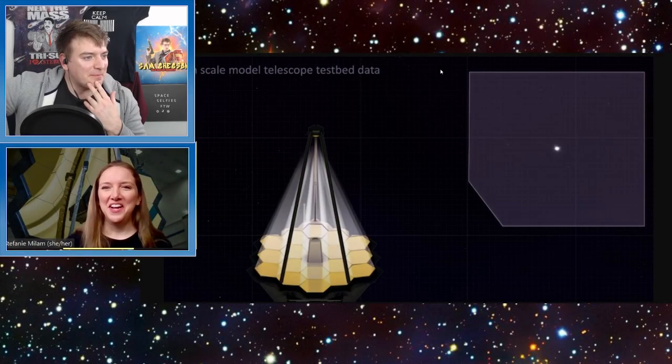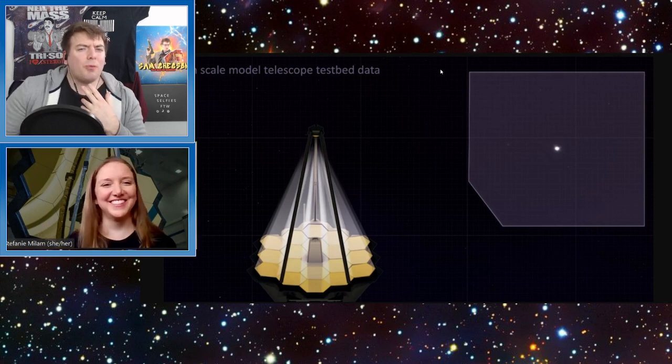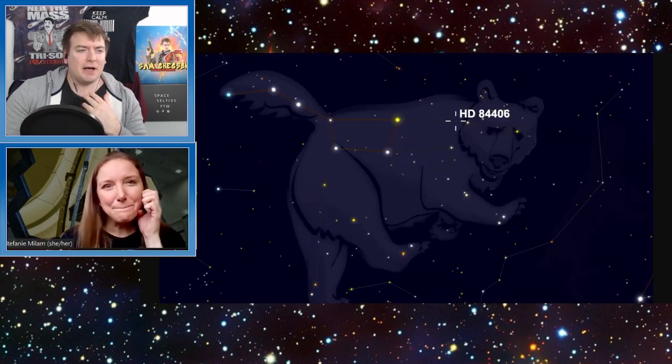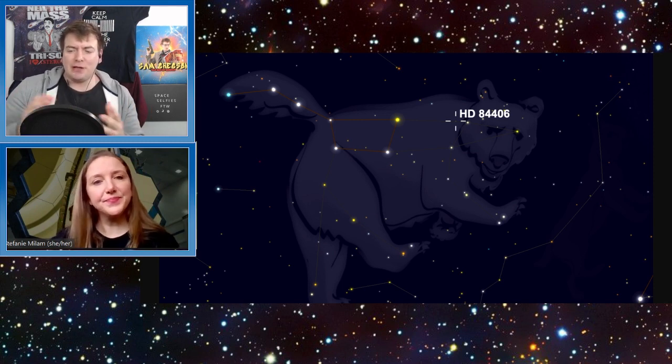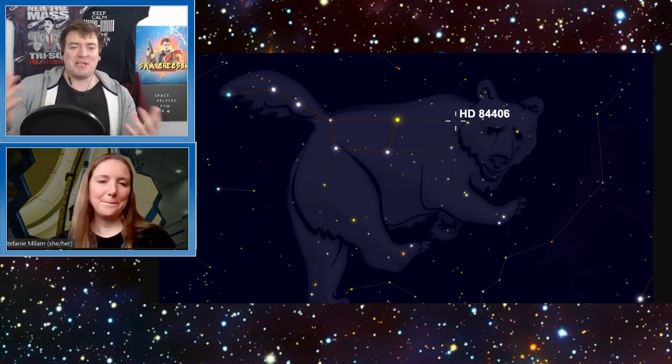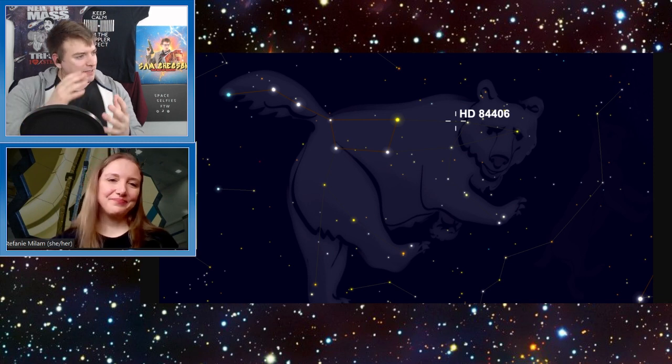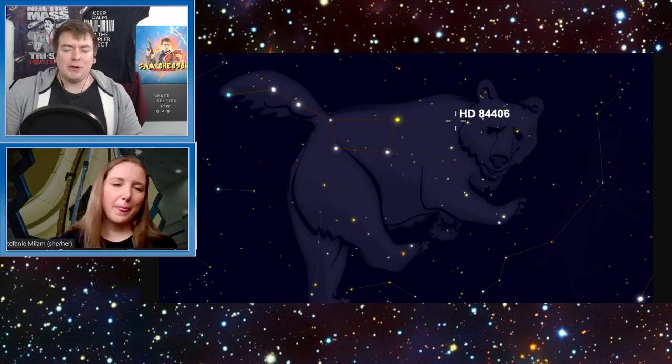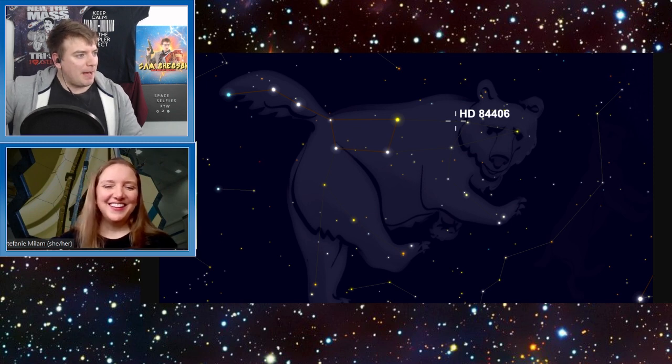So why did we pick this URSA major star? Is it particularly separated out? It looks in a relatively quiet patch of the sky. Obviously you can't see all the stars in the background and such, but is it a relatively quiet patch of the sky to use for alignment? Why did we choose this particular star to do our alignment campaign with?